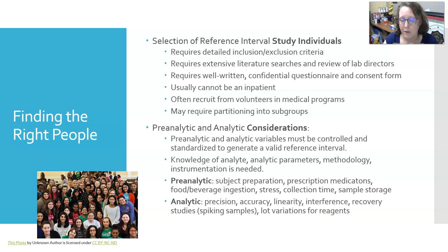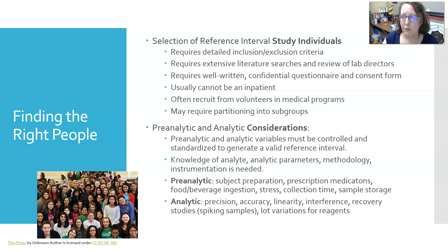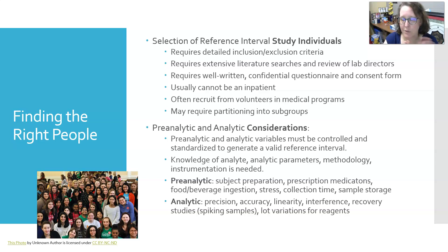Lot variation in reagents is another consideration — especially when studying 700 individuals. Can you buy enough reagent within one lot to complete all testing, or do you end up with four or five different lots with potential variation between them? This makes establishing reference intervals quite complex — something we often take for granted because the ranges appear right there on the lab report. Whenever comparing results to a reference range, always consider everything that goes into establishing that range.